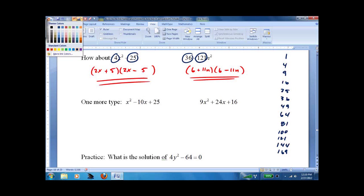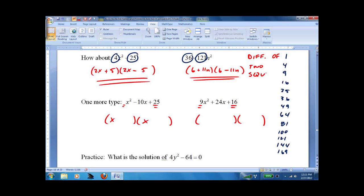So whenever you see perfect squares, there's a 1 out front, 25, 9, 16, most likely you're going to be dealing with what we call a perfect square. The one above is called the difference of two squares. And the one below is called the perfect squares.